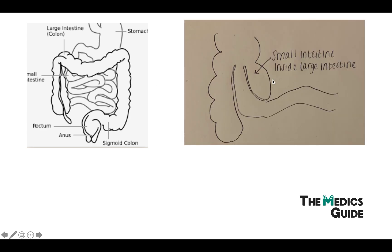Intussusception is when a portion of the bowel telescopes or invaginates into another, as I've drawn in this picture. This is important because two things can happen: firstly, the bowel can get obstructed, which can impair blood flow and lead to ischemia.